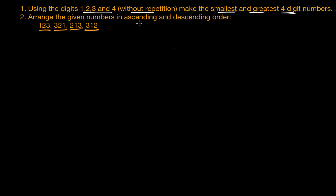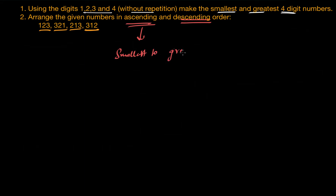We have two new terms: ascending order and descending order. Ascending order means arranging the numbers from smallest to greatest.